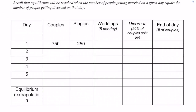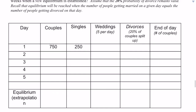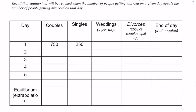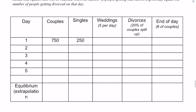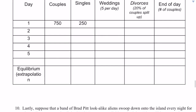Number nine says: suppose the marriage office staff goes on strike, so the office can only handle five weddings per day, but the divorce office remains open as usual. How many couples will be present on the island after a few weeks when a new equilibrium is established? Assume that the 20% probability of divorce remains valid.